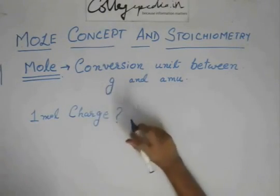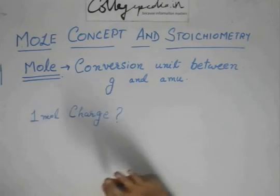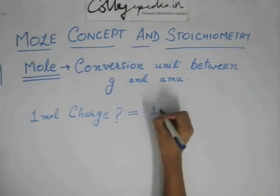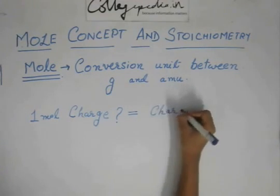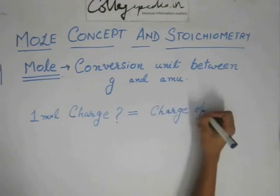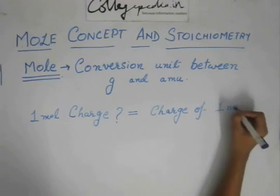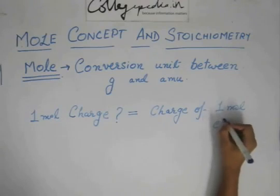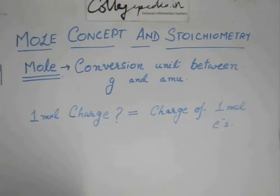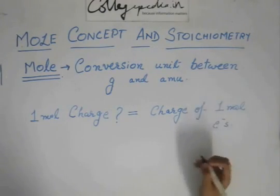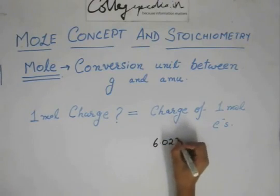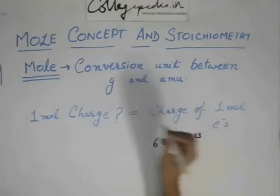1 mole charge means the charge of 1 mole of electrons or protons — anything — because electrons and protons have the same charge. So 1 mole of electrons will be 6.022 × 10²³ electrons, according to the definition of moles.